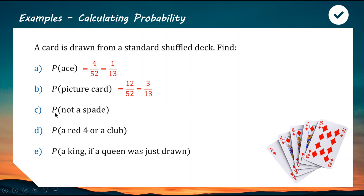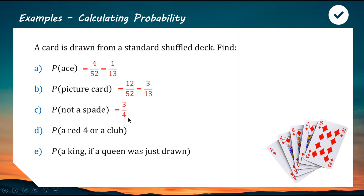For the probability of not a spade: a spade is one of the four suits, so the probability of drawing a spade is one out of four. If there's a one in four chance of getting a spade, there must be a three in four chance of not getting a spade.